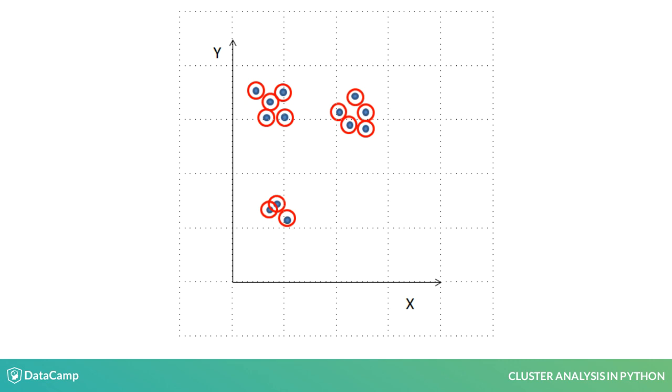A cluster center is the mean of attributes of all data points in a cluster. In this case, cluster centers will have two attributes, the mean of x and y coordinates. At this stage, cluster centers of all clusters are the coordinates of the individual points.